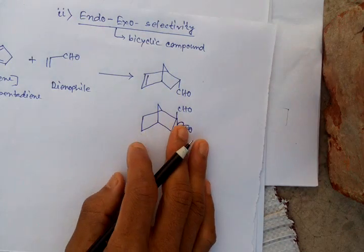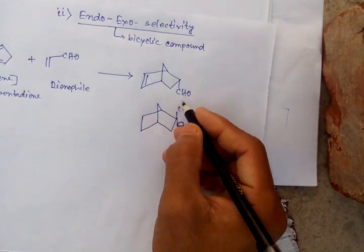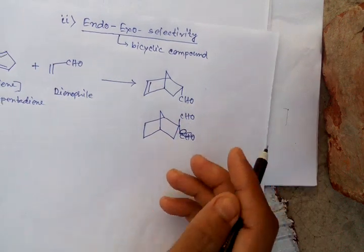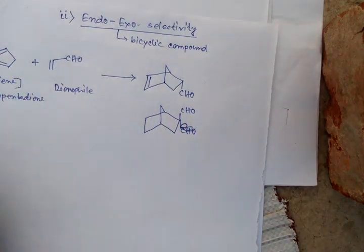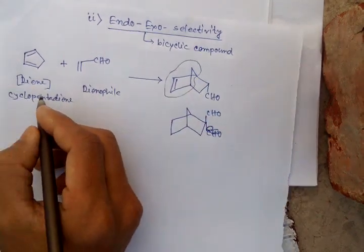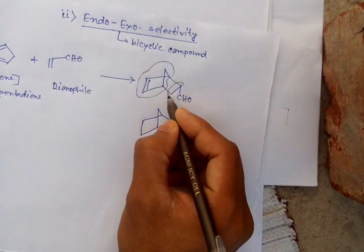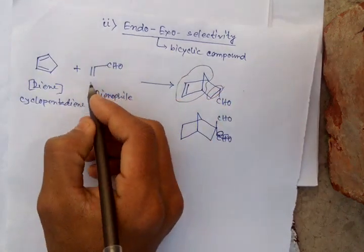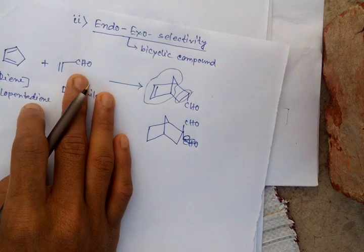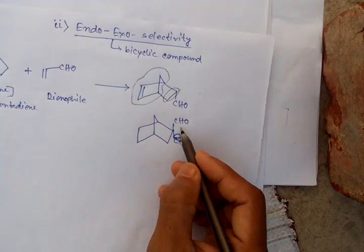Of this bicyclic ring. Now the question is whether the CHO group will be at bottom or top. Actually, this portion comes from the cyclopentadiene, and this portion comes from this dienophile, and this CHO group, this aldehyde group, is located above side or down side, bottom side or top side.